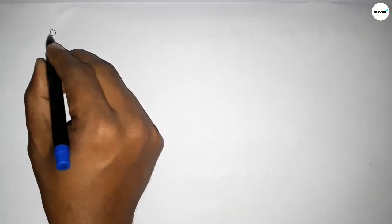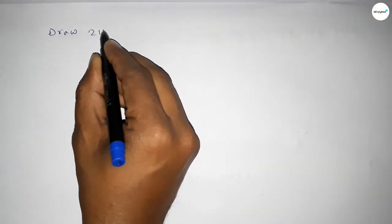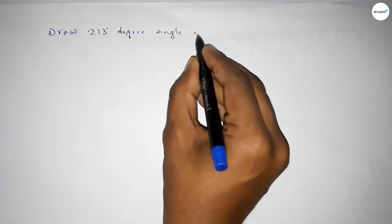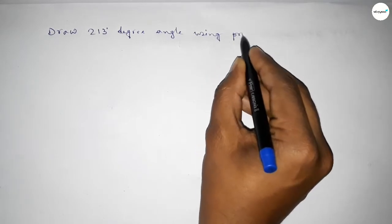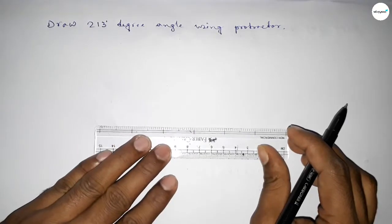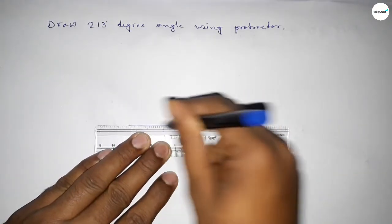Hi everyone, welcome to ISizeShare Classes. Today in this video, we have to draw a 213-degree angle using a protractor. So let's start the video. First of all, we have to draw a straight line of any length and take point B here and C here.